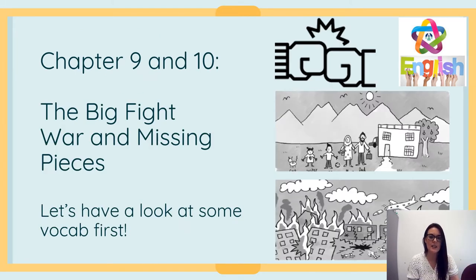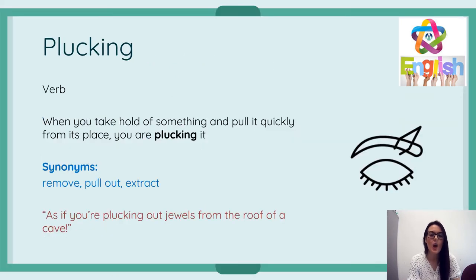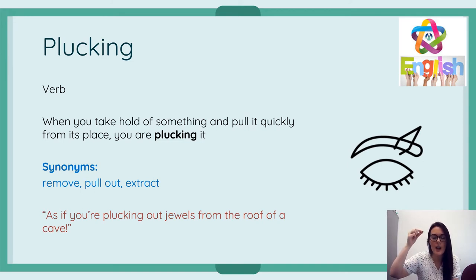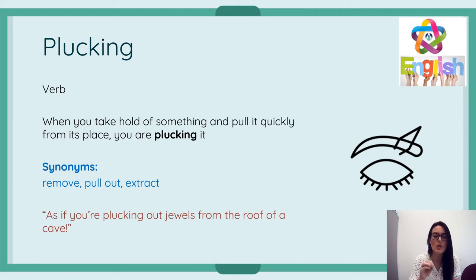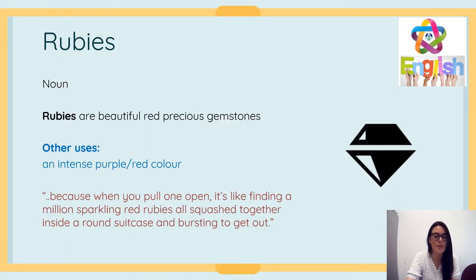Let's have a look at some vocab first before we get started. The first verb we're going to look at today is the verb 'plucking.' Plucking is when you take a hold of something and pull it quickly from its place. The image shows someone plucking the hair from their eyebrows. You may also pluck a guitar string or pluck the feathers from a chicken. Synonyms include: to remove, to pull out, to extract. The example from the text: 'as if you're plucking out jewels from the roof of a cave.'